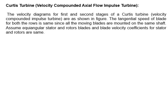The velocity diagrams for the first and second stage of a Curtis turbine are shown. The tangential blade speed for both rows is the same since all moving blades are mounted on the same shaft, so blade speed u remains constant. Assuming equiangular stator and rotor blades, and that the blade velocity coefficient Cb is the same for stator and rotor: Cb equals Vr2 divided by Vr1 for the first stage, and Cb equals Vr4 divided by Vr3 for the second stage.